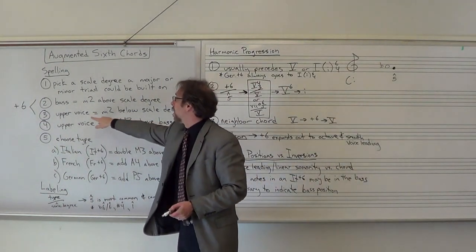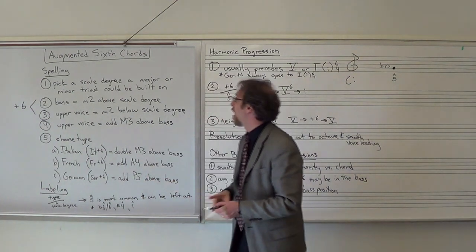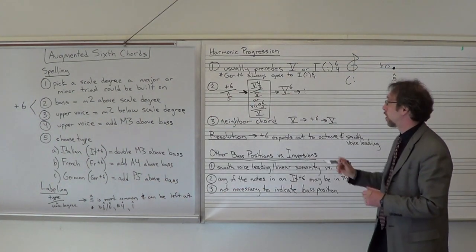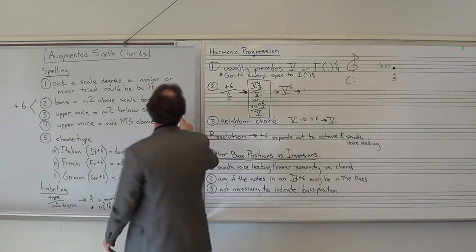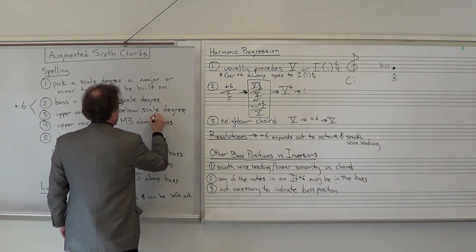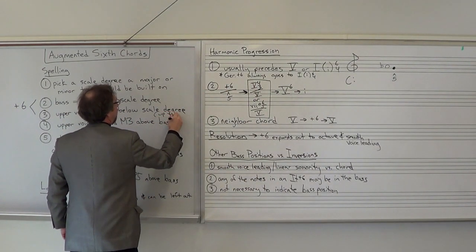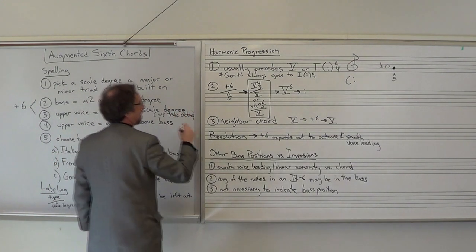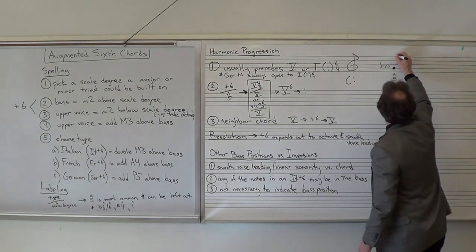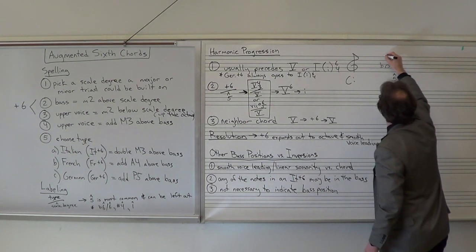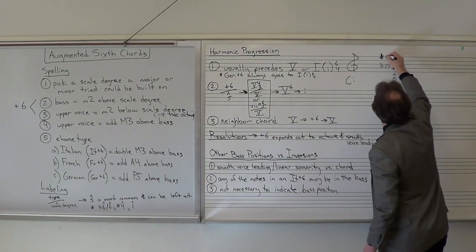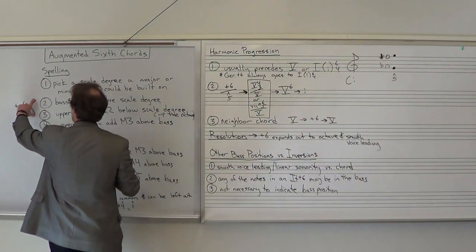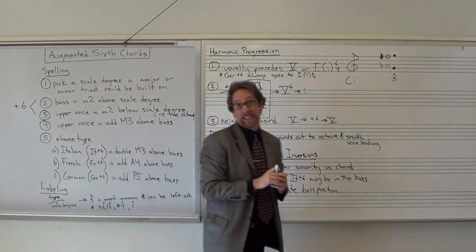Step 3: in an upper voice, write a minor second below that scale degree, indicated up the octave. So this scale degree up the octave, and a half step below that would be an F-sharp, such that the interval I create is an augmented sixth.